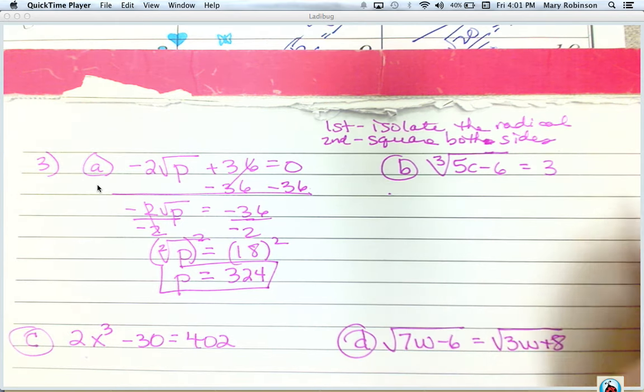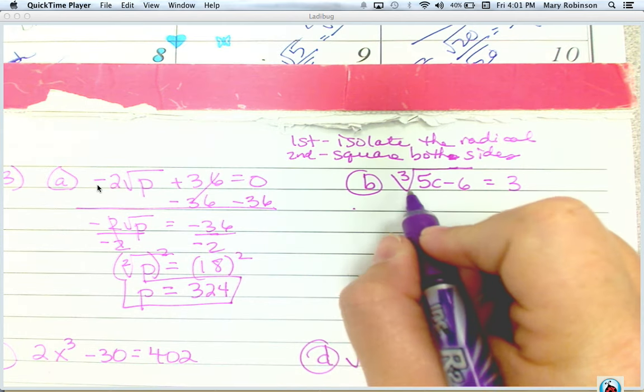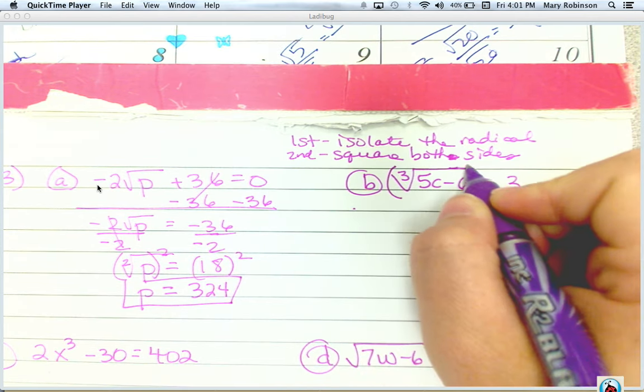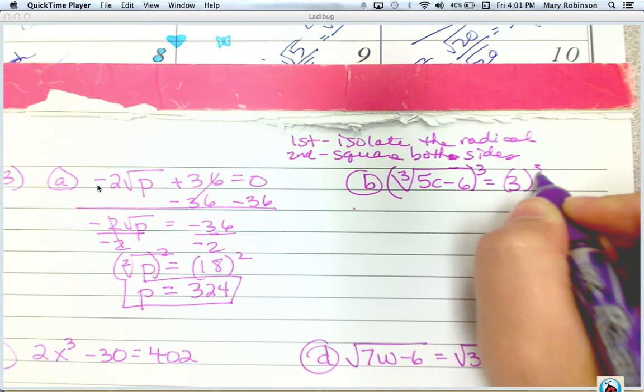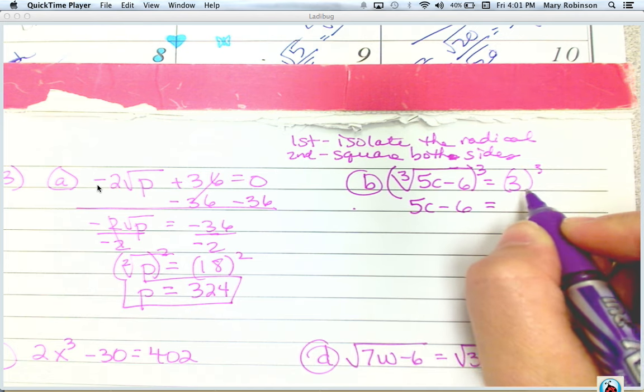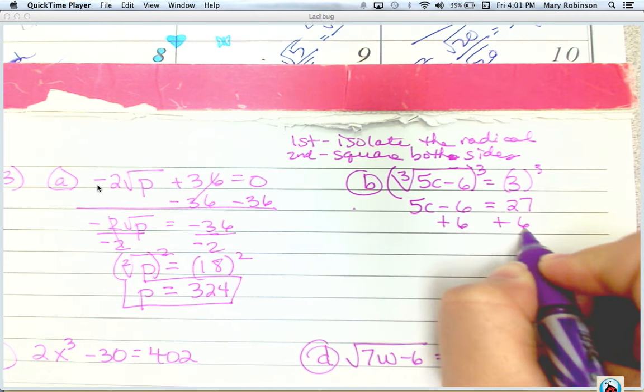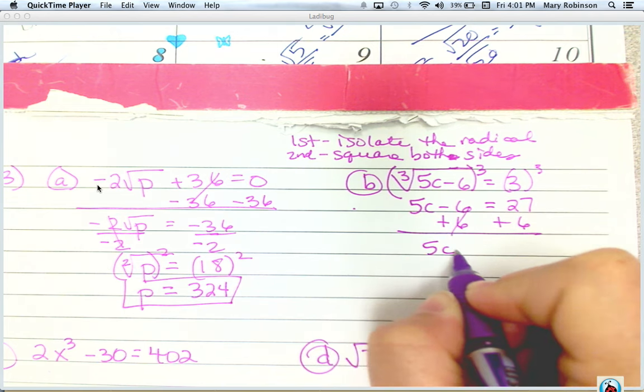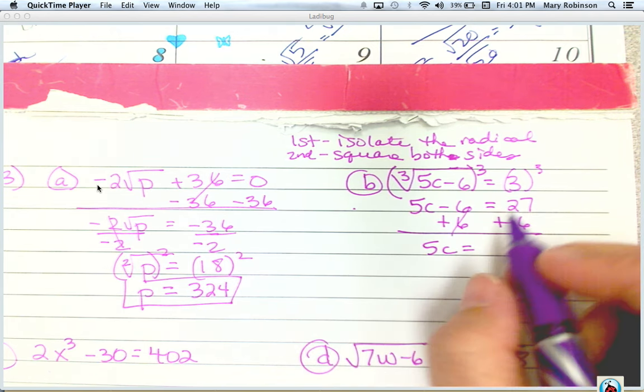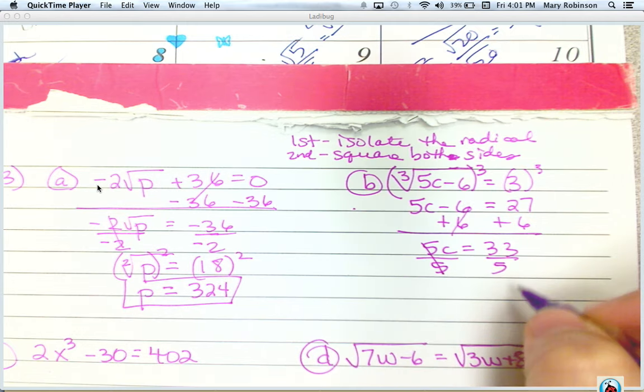Next, for B, we see that the radical is isolated on both sides. Because it's the cube root, we actually will cube both sides. The cube root cancels it out, leaving 5c minus 6 equals 3 cubed, which is 27. Then it just becomes a linear two-step equation. So 33 fifths.